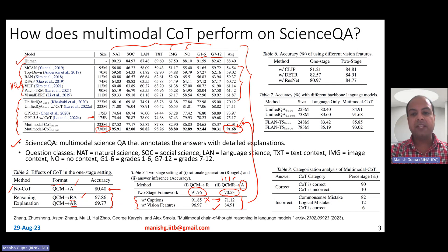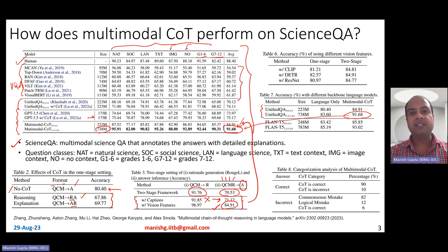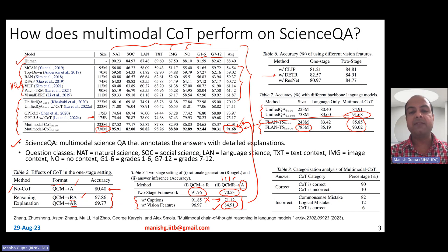Using the base model gives 84.91 accuracy, but with the large model it becomes 91.68. These all use UnifiedQA as the basic model. If you change the base LLM to Flan-T5 with almost the same number of parameters — less than 1 billion — you get into the realm of 93.02 percent accuracy. All these experiments use DETR as the image extractor, though they also experimented with CLIP and ResNet, but observed the best accuracy with DETR.